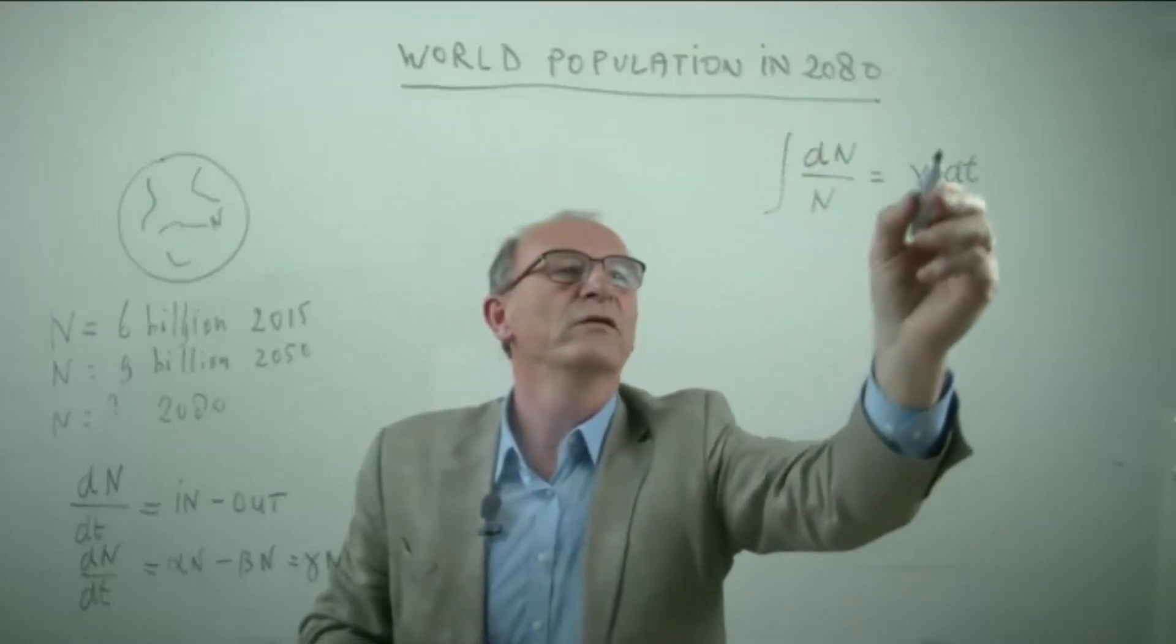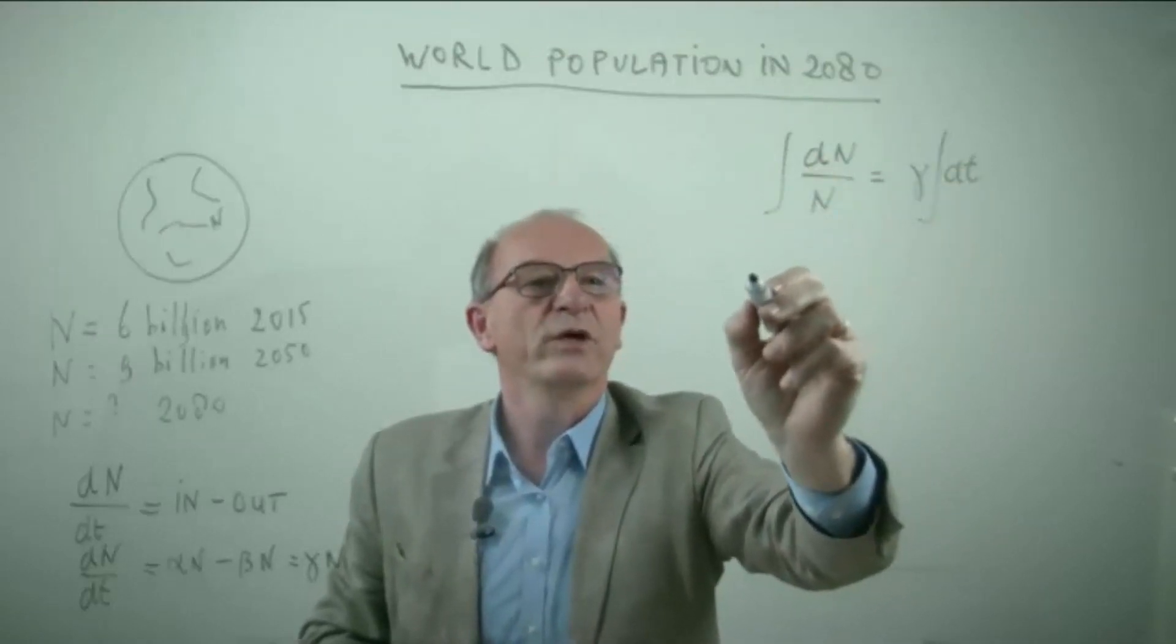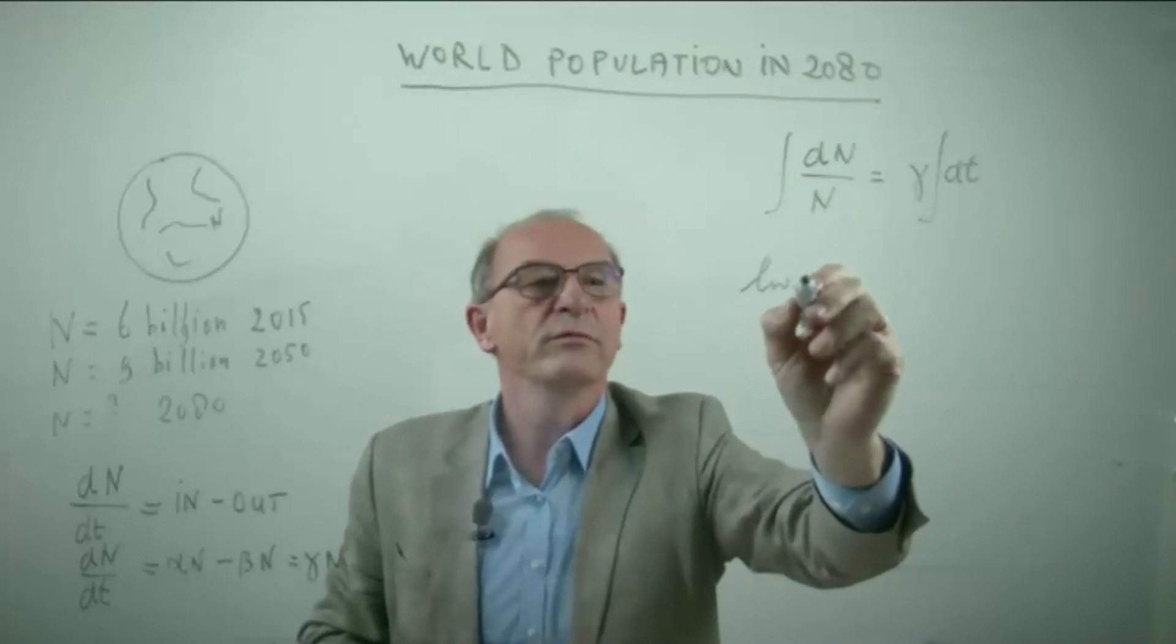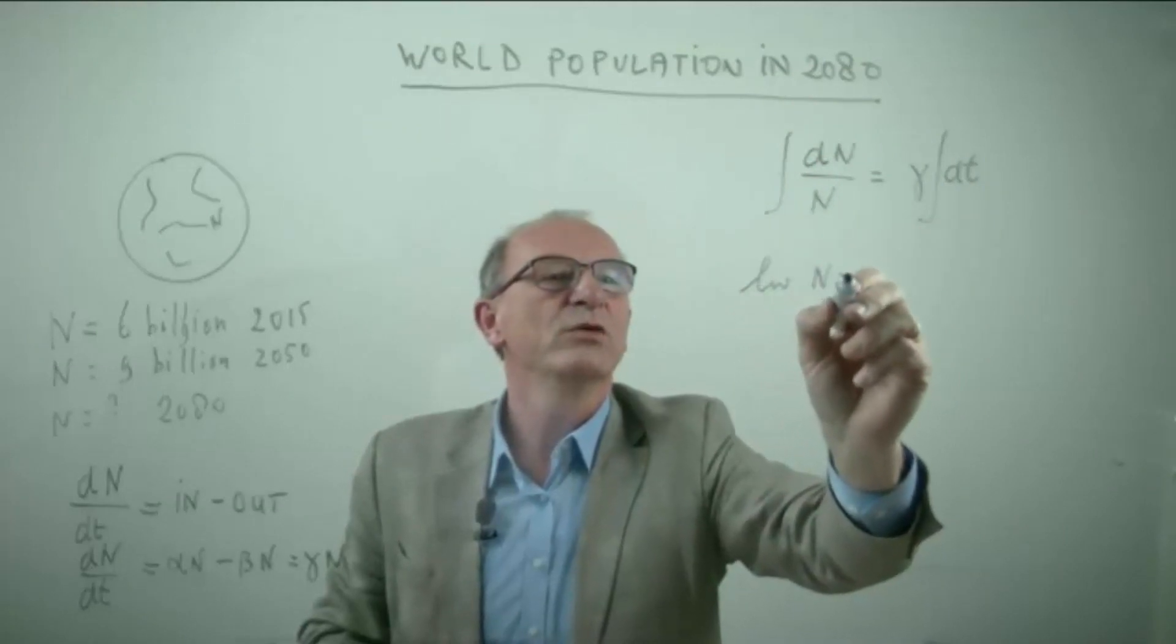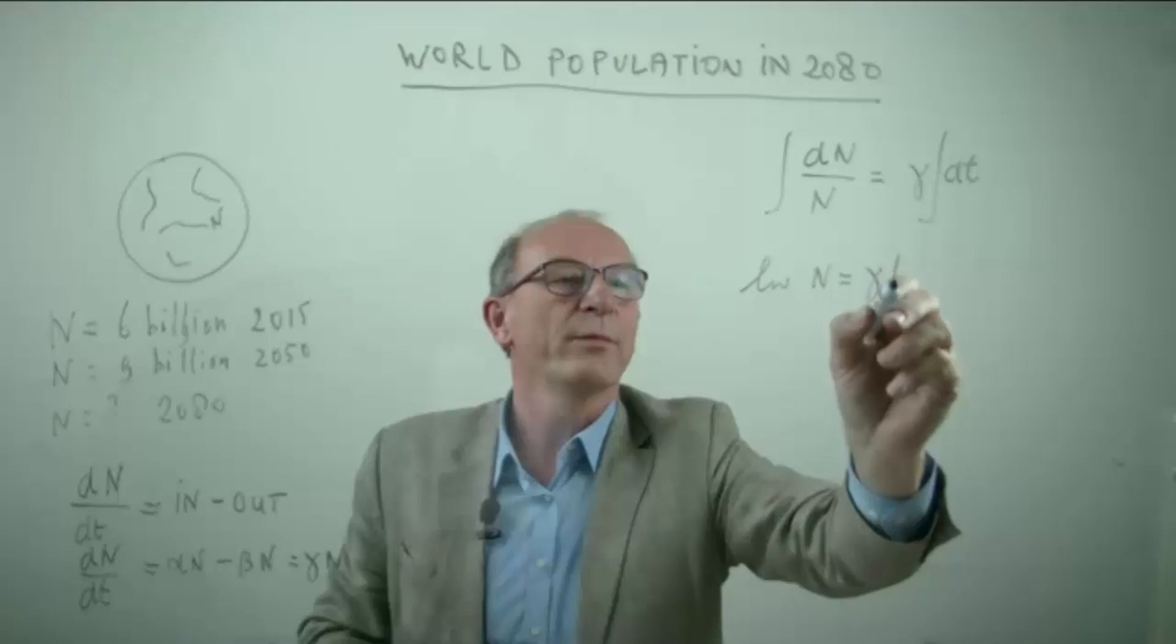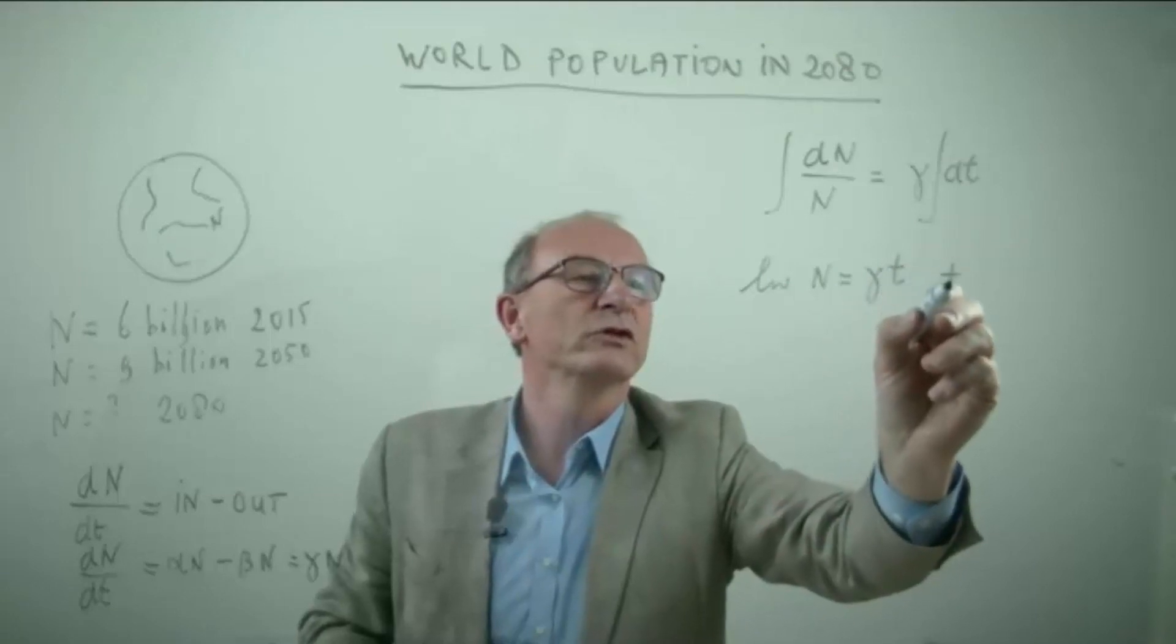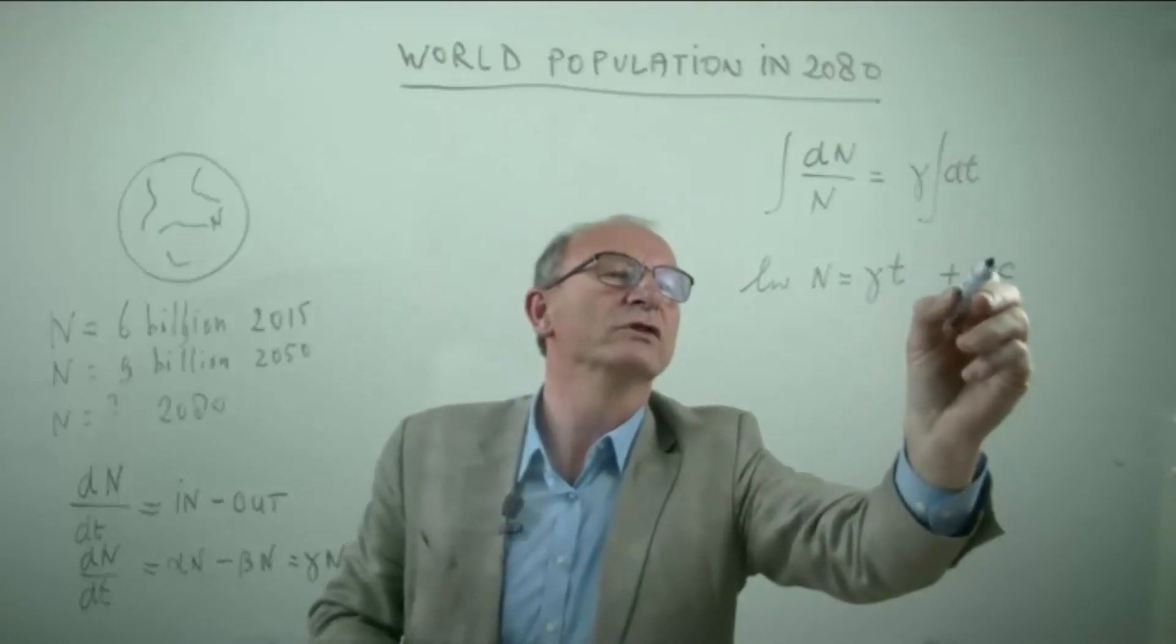We integrate this at two sides, and then we get the natural logarithm is equal to the constant multiplied by the time plus a certain integration constant.